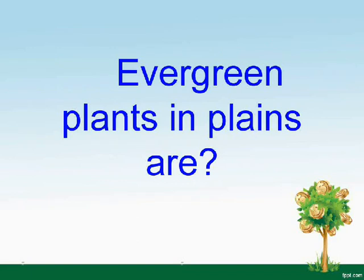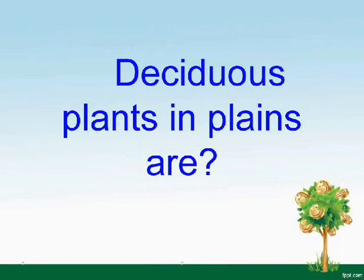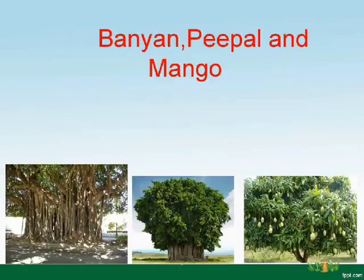Evergreen plants in plains are coconut, tea, coffee, and sugarcane. Deciduous plants in plains are banyan, peepal, and mango.